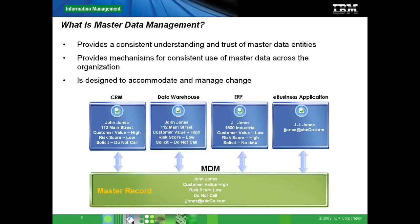As you can see in this diagram, a data warehouse, ERP, and e-business app all have different variations of the same customer, Mr. Jones. With MDM set up, all this information about Mr. Jones is brought into one single place — name, risk rating, preferences, contact information, addresses, etc. — all integrated and accurate in one location.